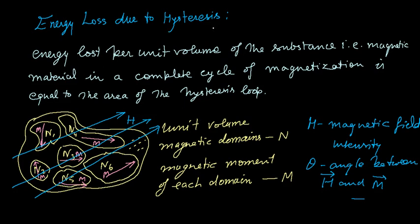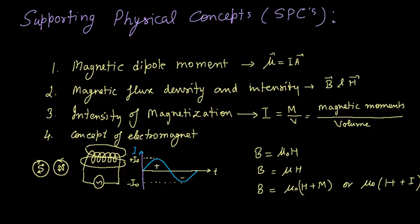So energy loss is due to hysteresis. Here our assumption is: what is the energy lost per unit volume of the substance—that is, a magnetic material—in a complete cycle of magnetization?